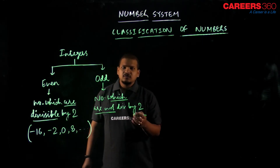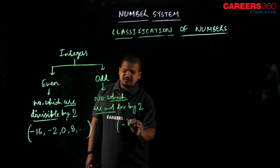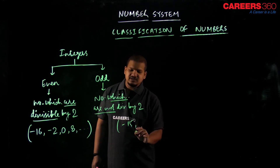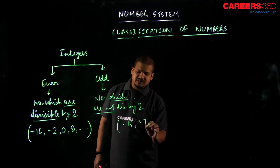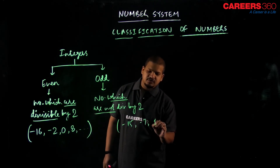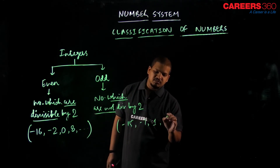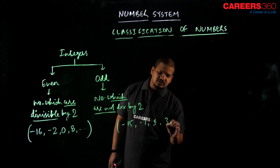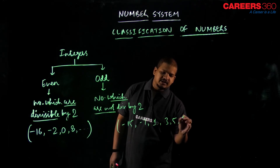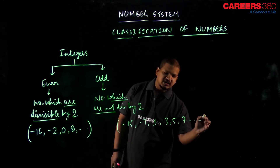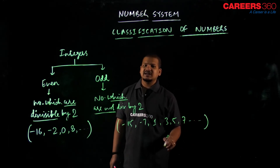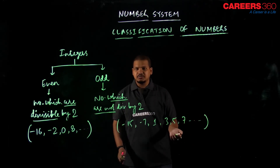Examples of odd numbers are minus 15, minus 7, 1, 3, 5, 7, and so on — these are the odd numbers.